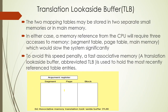This is segmented page mapping. The two mapping tables may be stored in two separate small memories or in main memory. The problem is that when both tables are in main memory, we need three accesses to memory for every single CPU reference: one for the segment table, one for the page table, and one to access the actual data in main memory. Three accesses to memory will slow the system significantly.